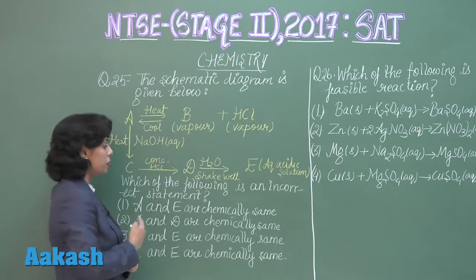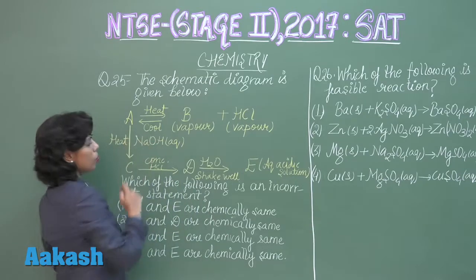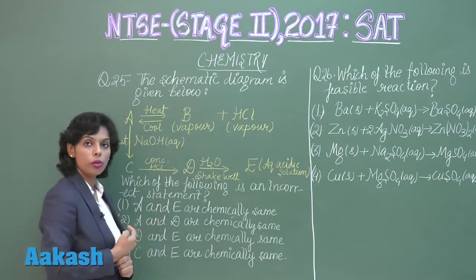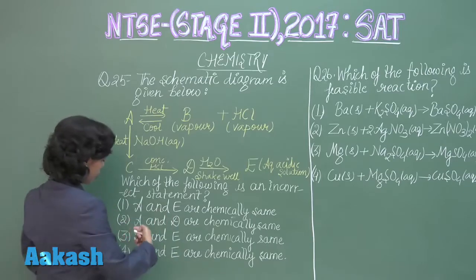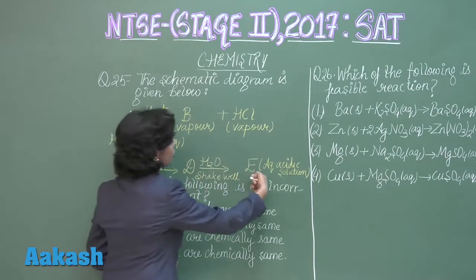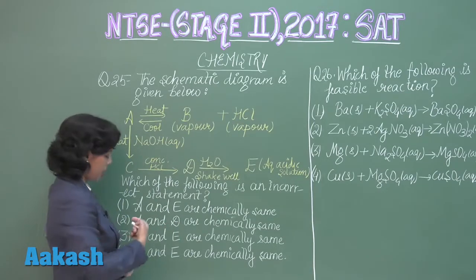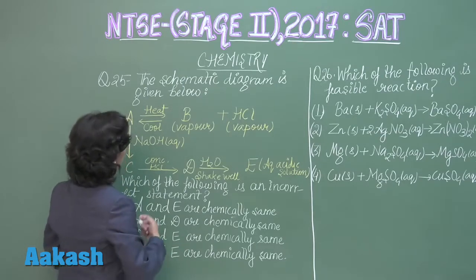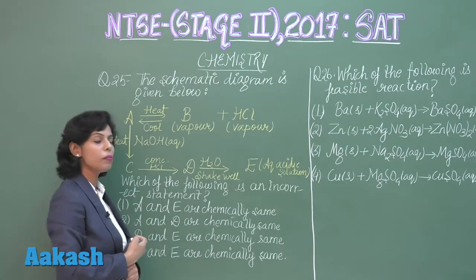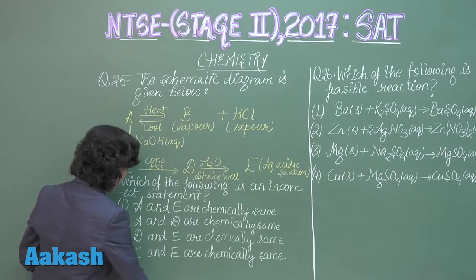Now checking the options: A and E are chemically same — A is ammonium chloride and E is also ammonium chloride in solution, so this is correct. A and D are chemically same — both are ammonium chloride, correct. D and E are chemically same — D is ammonium chloride and E is its aqueous solution, chemically same, correct. C and E are chemically same — C is ammonia and E is ammonium chloride solution, so this statement is incorrect.